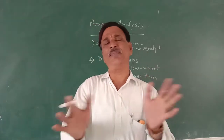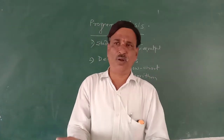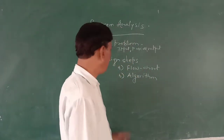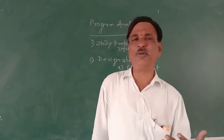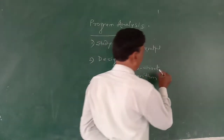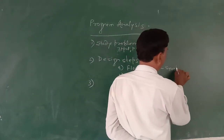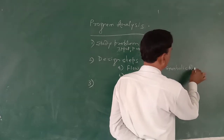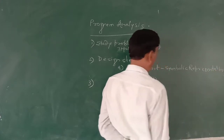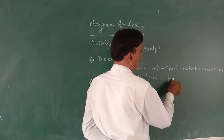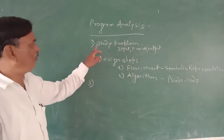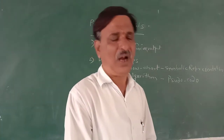A flowchart is a symbolic representation of a program - it is not the program itself, but a symbolic representation of it. An algorithm is also a representation of the program using pseudocode. So a flowchart is a symbolic representation of the program and algorithm is also a representation using pseudocode.